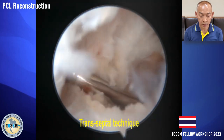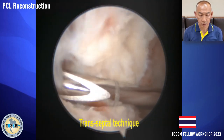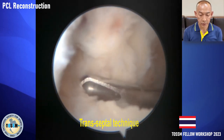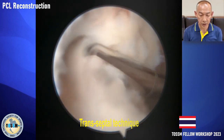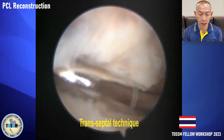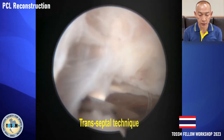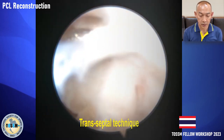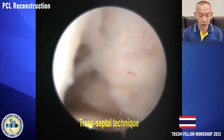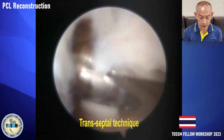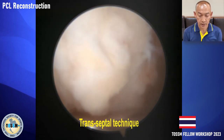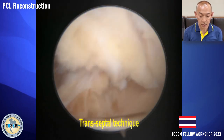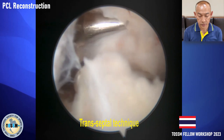The shaver dissects the posterior cruciate ligament from the posterior capsule down to the tibial footprint of the PCL. During this step, you should avoid injury to the neurovascular structures that lie within the posterior capsule and behind the posterior horn of the lateral meniscus. You should keep the shaver turned toward you at all times.